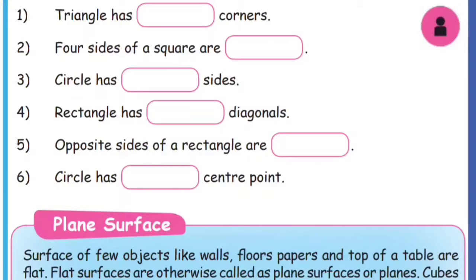Next, practice. So we are talking about activities. A triangle has dash corners — how many corners does a triangle have? Three corners. The square has four sides, so how many corners are there? These are the four corners of the square — all four sides are equal. A circle has one side.